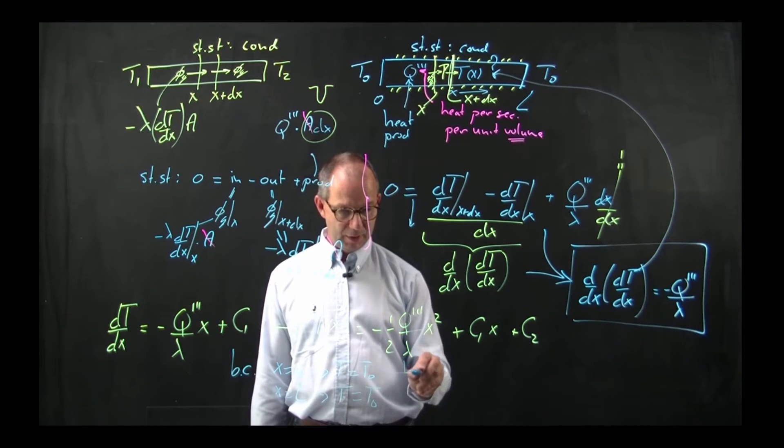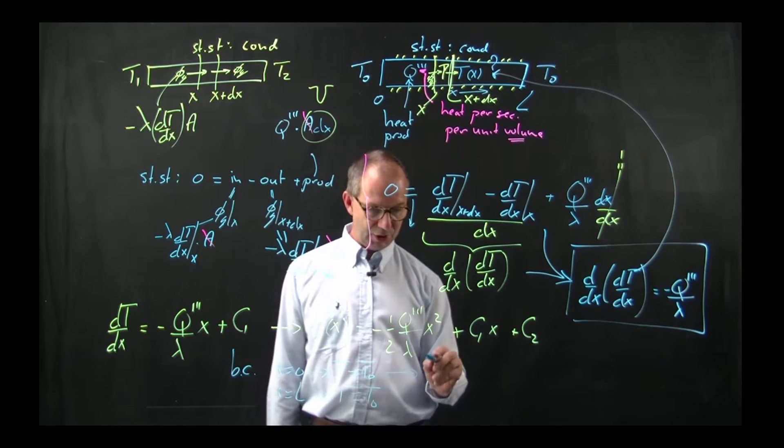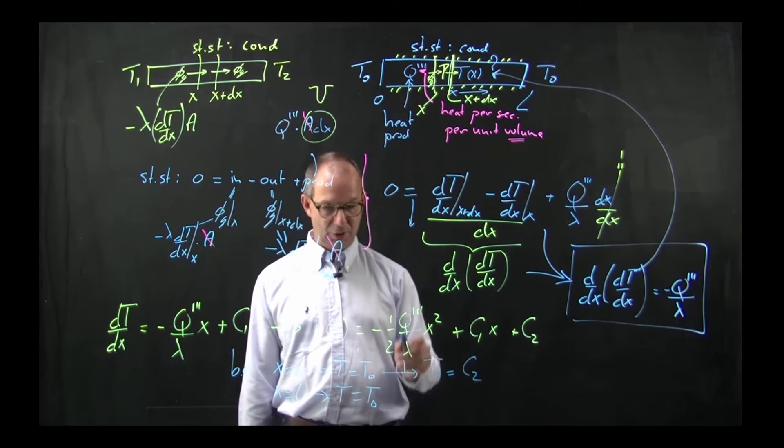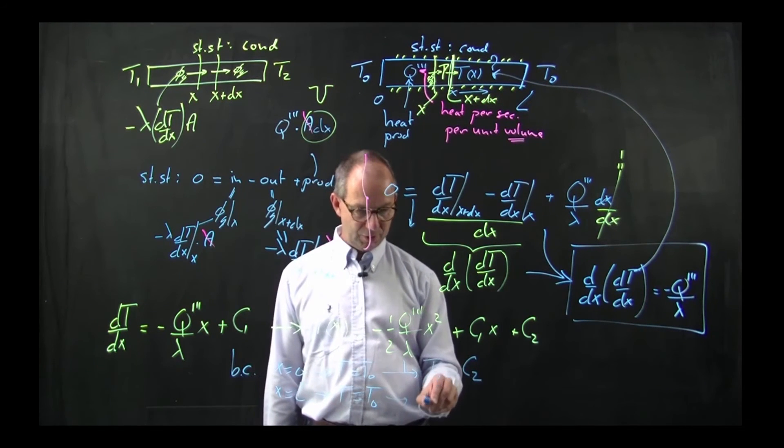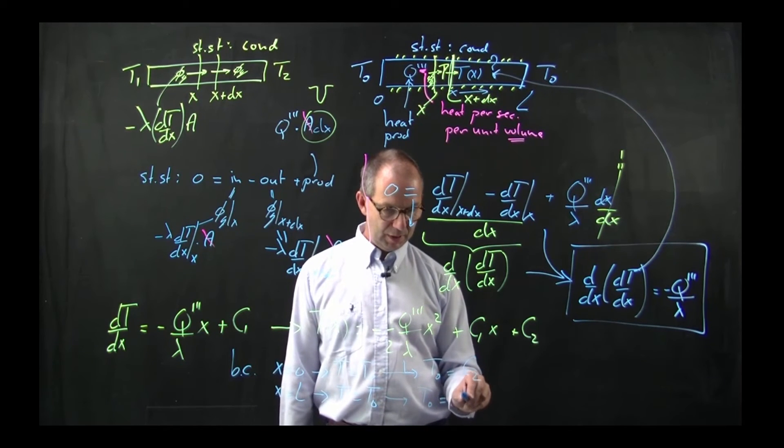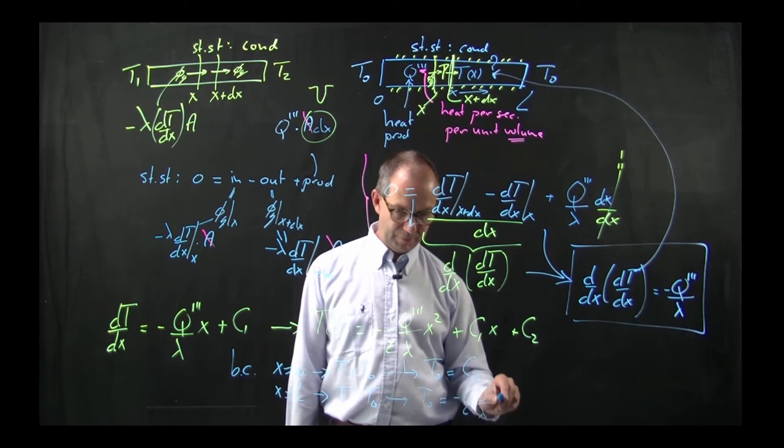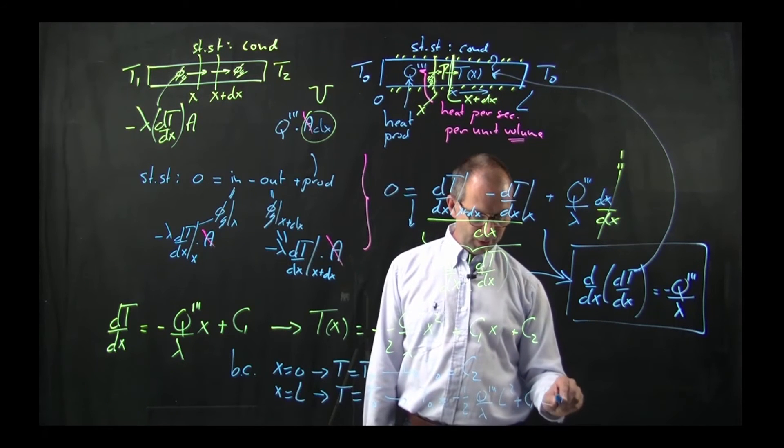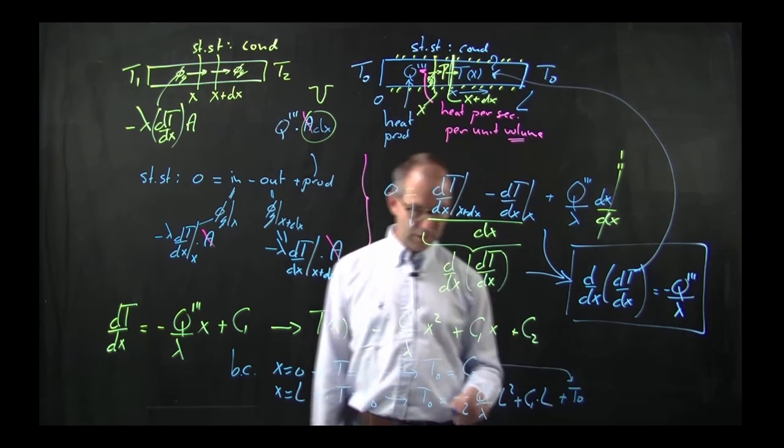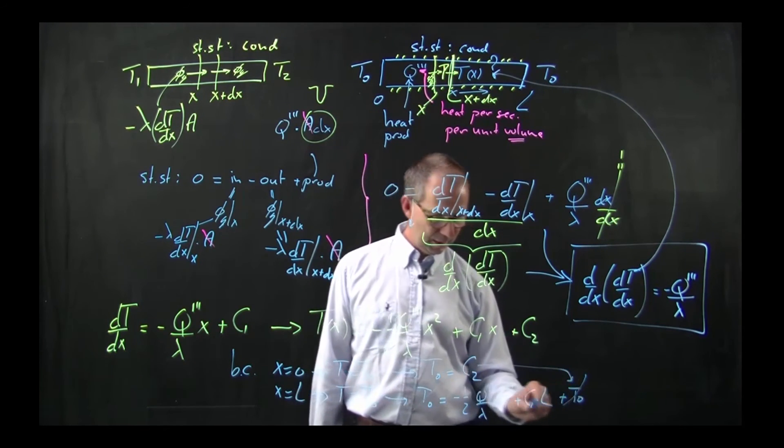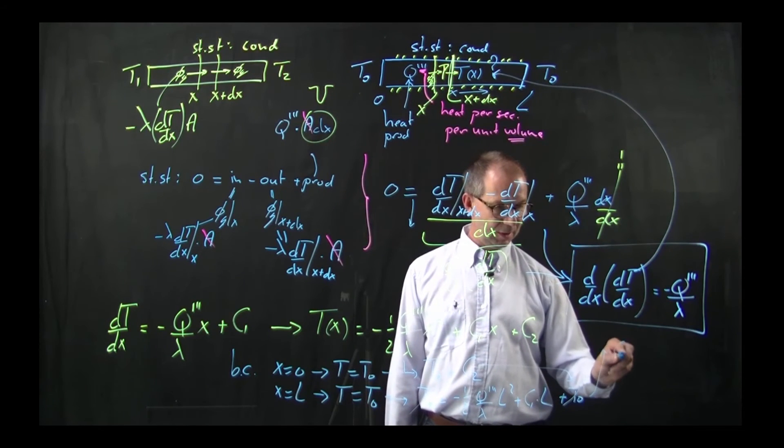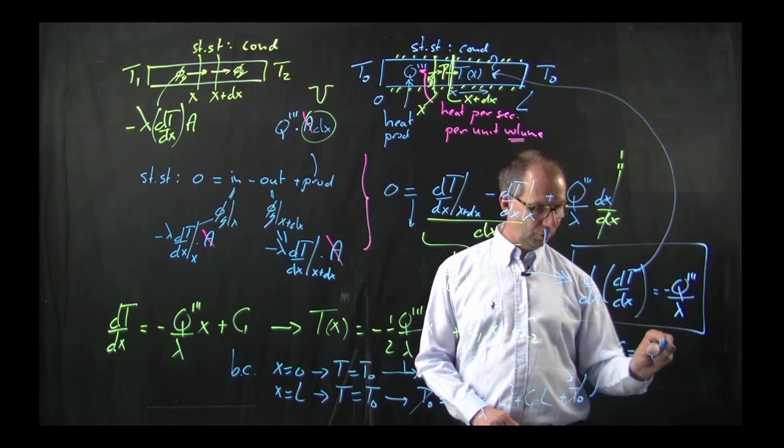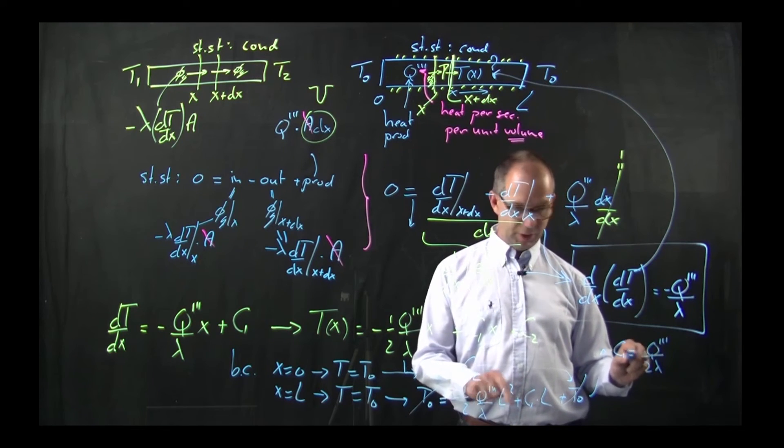Out of the first one, substitute T₀ here and x is zero on the other side. You immediately see that the second constant c2 equals T₀. Put this one in and you find T₀ is also equal to minus a half Q lambda L squared plus c1 times L plus T₀. So this one disappears and c1 can be solved, equals plus Q triple dash over 2 lambda and there is still one L surviving.